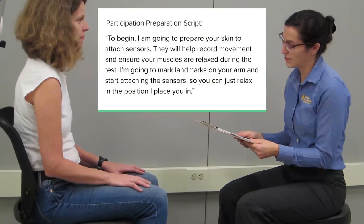Set the participant in a standard height chair, ensuring that they are sitting with a straight back and feet flat on the floor. Verbally prepare the participant for EMG sensor and electrogoniometer placement using the standardized script.